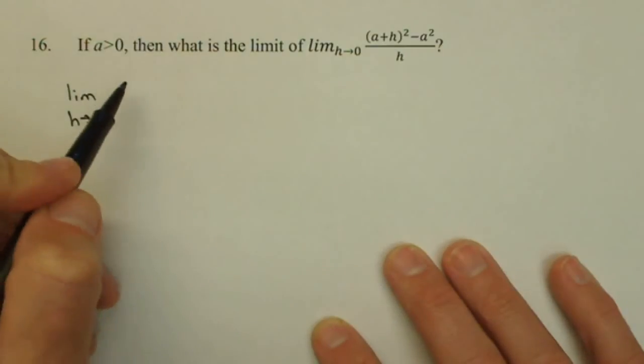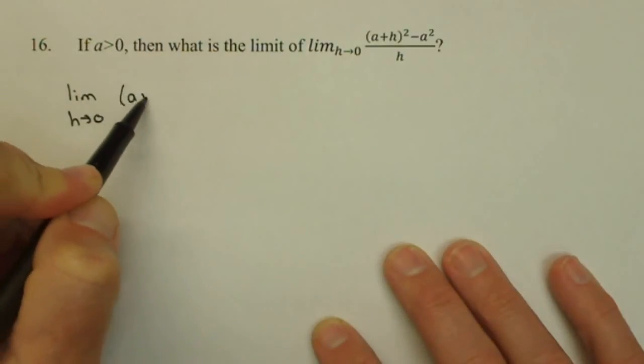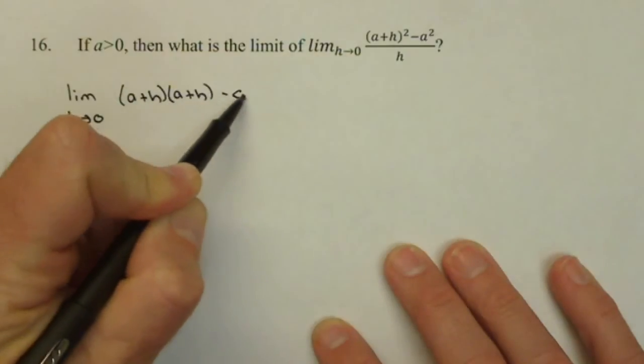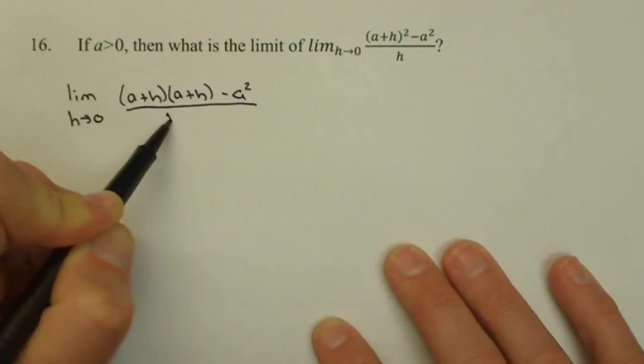So a plus h the quantity squared is a plus h times a plus h minus a squared all over h.